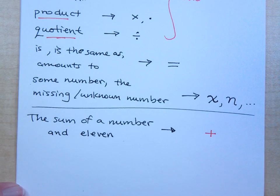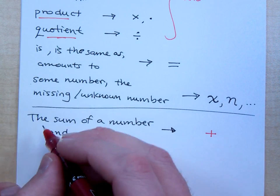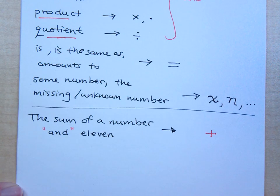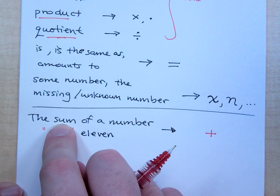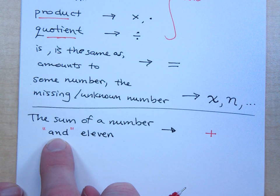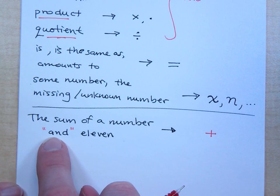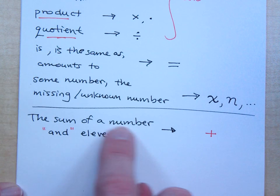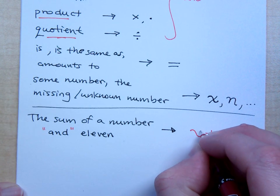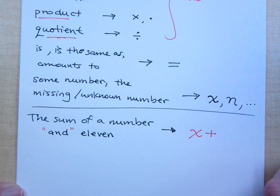So when I see the sum of a number and eleven, here's the word and. That tells me where my addition for the sum goes. What comes before the word and? What do you see before the word and? A number. How do you write a number? X.